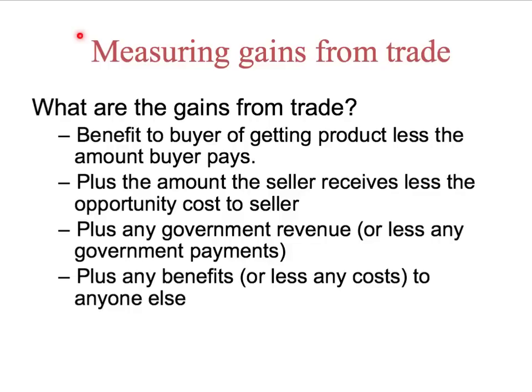Remember from our assumptions, there are four parties who are going to be relevant here: buyers, sellers, government, and anyone else. When we're looking at gains from trade, government's going to be easy. The government may get some revenue — for example, if there's a tax in place — or the government may pay some money out if there's, for example, a subsidy. So that's going to be how we measure the government's benefit or cost.